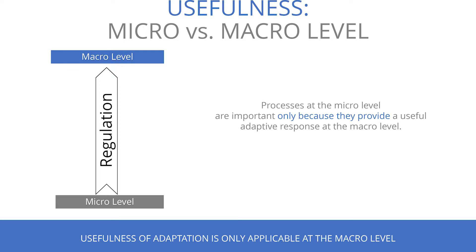Micro level refers to cells, ions, and biochemical processes. Macro level refers to the adaptational response of our organism as a whole unit. Between them there is regulation — a bridge between micro-level processes and macro-level adaptational response. Processes at the micro level are important only because they provide a useful adaptational response at the macro level. That is where their usefulness lies — the purpose of these processes is to achieve a useful adaptational response on the macro level.